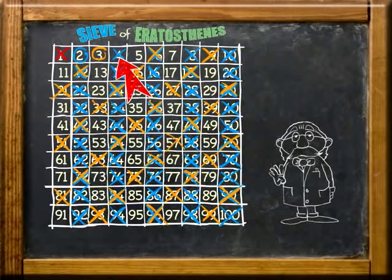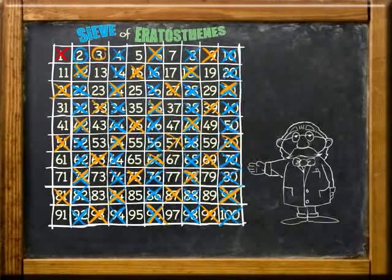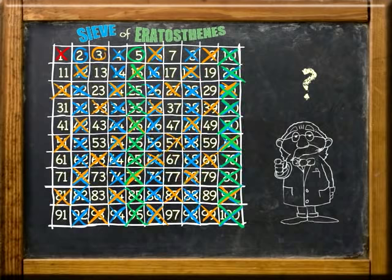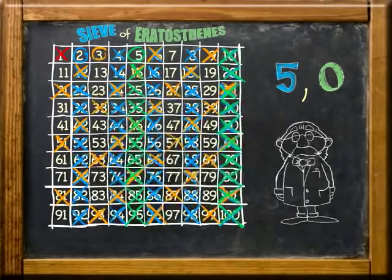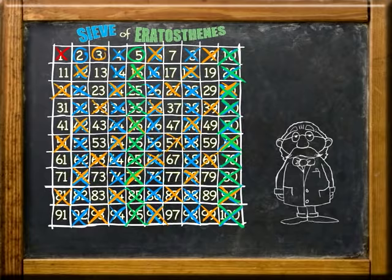You'll notice 4 is already crossed out, because it's already a multiple of the prime number 2. The next unmarked number is 5. I'll just place a circle around the 5 because it is a prime number. Next, let's skip count by 5s. They all end in 5 or 0, so if a number ends in 5 or 0, you know one of its factors is 5.